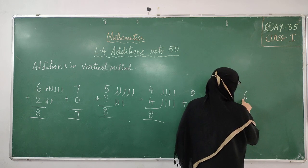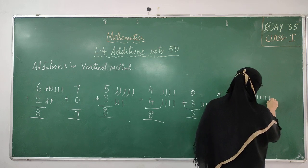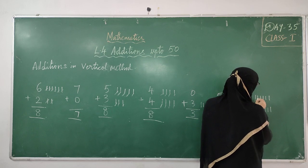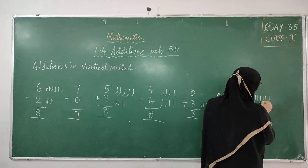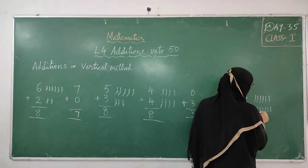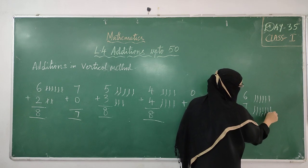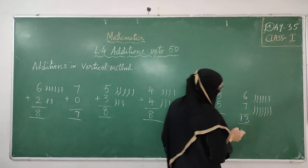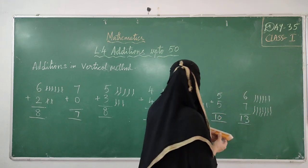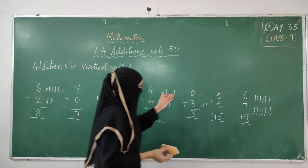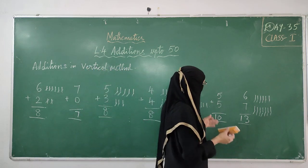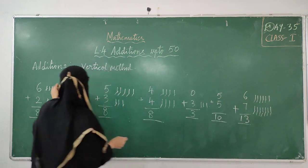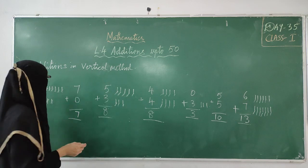Next example: 6 plus 7. Count 6 lines: 1, 2, 3, 4, 5, 6. Then 7 lines: 1, 2, 3, 4, 5, 6, 7. Counting all together: 1, 2, 3, 4, 5, 6, 7, 8, 9, 10, 11, 12, 13. I got 13. So directly I will keep 13 here. If you get a single digit answer you can keep it; if you get 2 digits, directly write whatever answer you get.